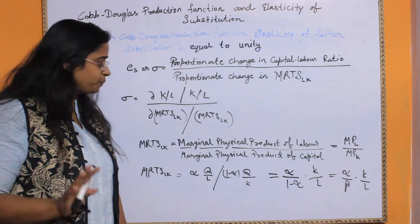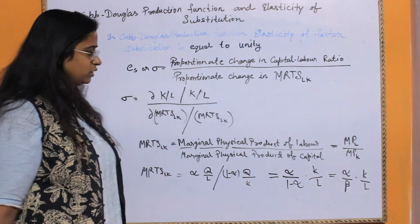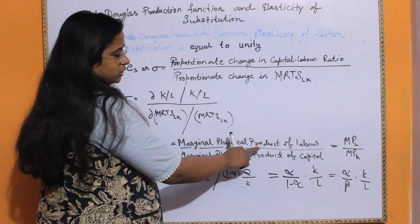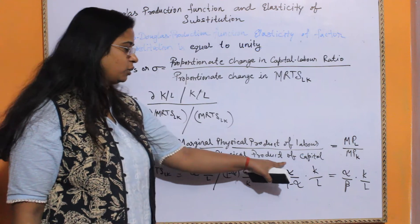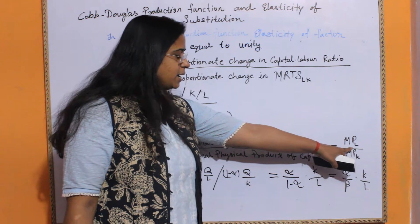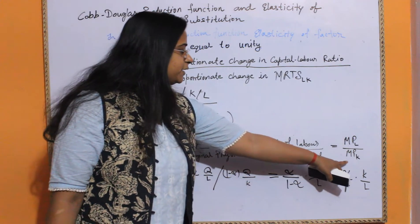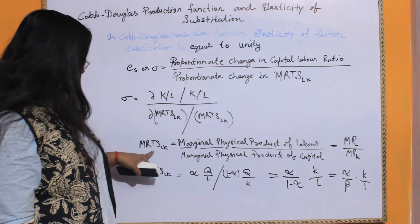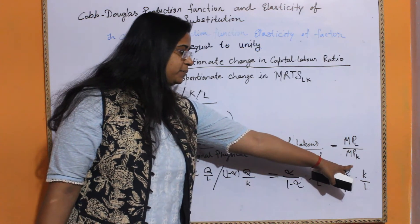Now, MRTS of L for K is equal to the ratio of marginal physical product of labour divided by the marginal physical product of capital — that is, MPL divided by MPK.